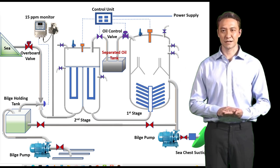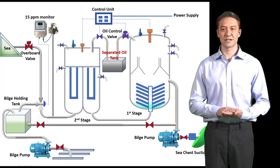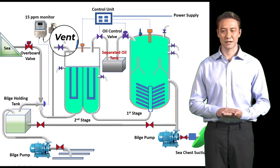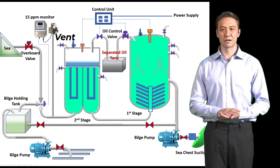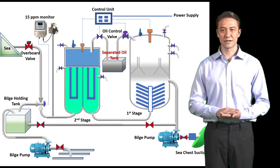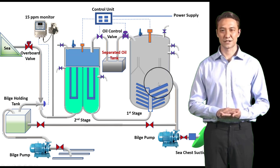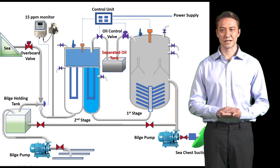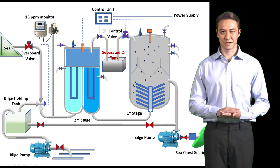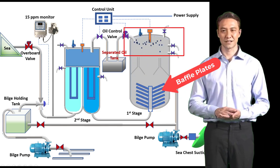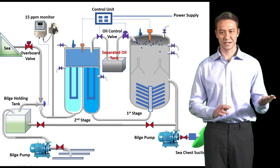In the starting steps, clean seawater is delivered to the first stage of the separator. The vent is carefully opened to allow air to be purged out. Once all the air is out and water is present, oily water is then drawn from the bilge holding tank and introduced to the same inlet. This applies the principle of gravity and density, causing oil to accumulate at the top of the separator. This design uses waffle plates as the oil tends to stick to them and move upwards.